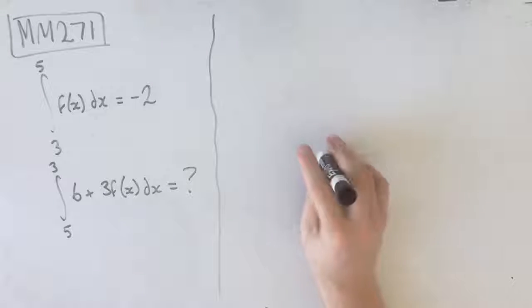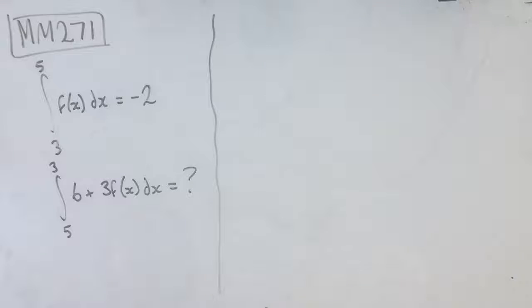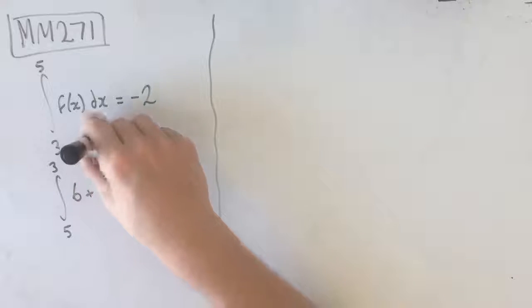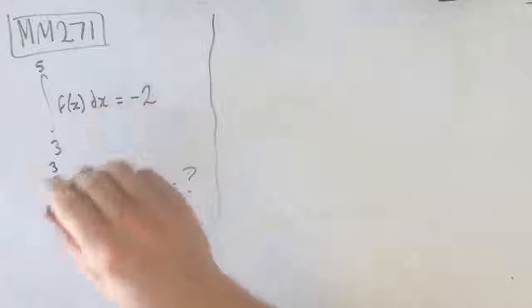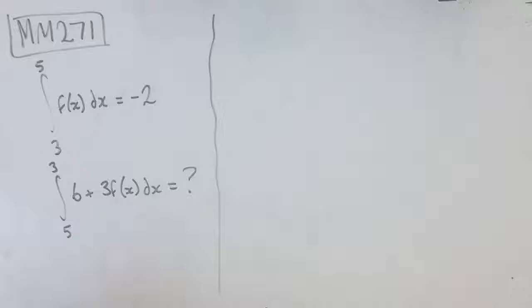Hey guys, welcome to question MM271 of the Maths Methods Fortify Study Guide. We've got this question: if the integral from 3 to 5 of f(x) dx equals -2, then the integral from 5 to 3 of 6 + 3f(x) dx is equal to what?